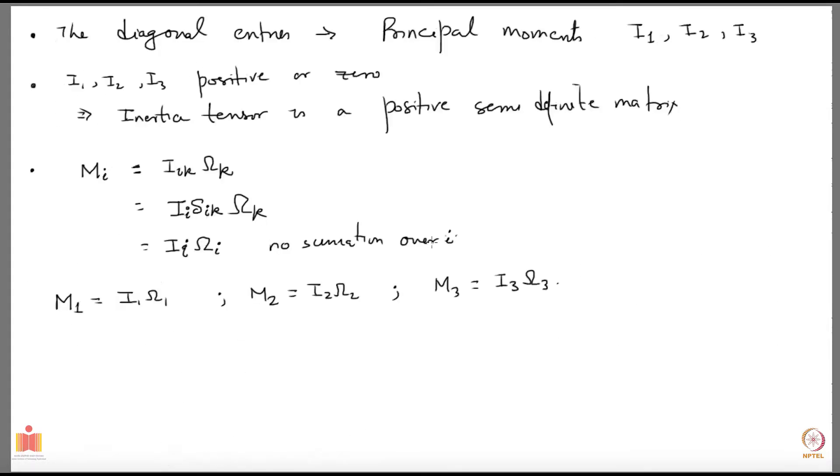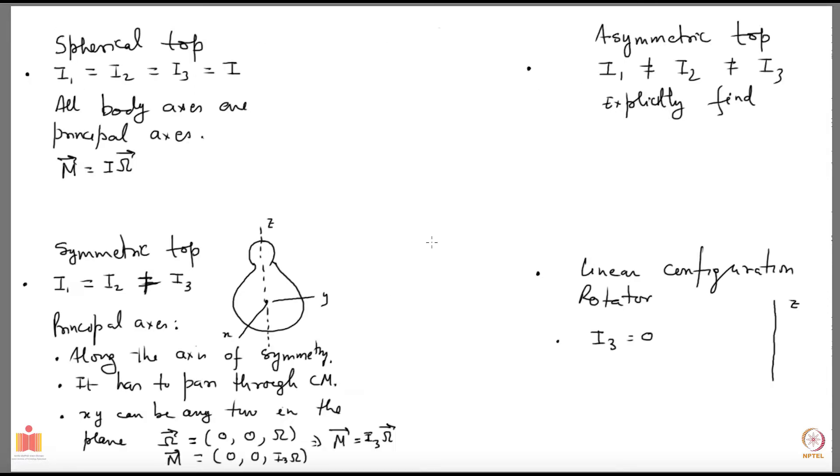Let us continue our discussion of rigid body motion. Last time we introduced inertia tensor. We wrote down an expression for the intrinsic angular momentum of the rigid body which was expressed in terms of the inertia tensor and the angular velocity omega of the rigid body. Today we will start by writing what the kinetic energy is if I express this in terms of the angular velocity. That is the task we have in front of us.